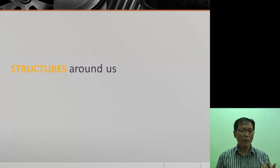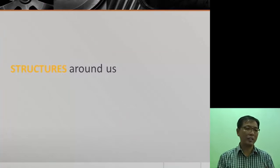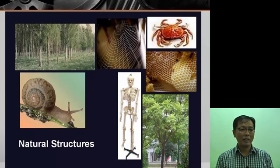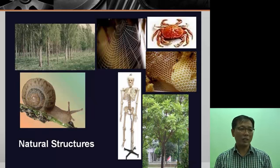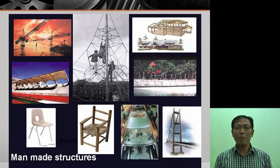If you look around, you'll see natural structures — things like trees, spider webs, crab shells, and the human skeleton. There are also man-made structures such as bridges, overhead bridges, chairs, and playgrounds.